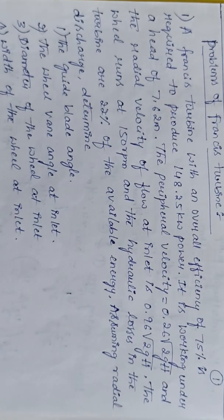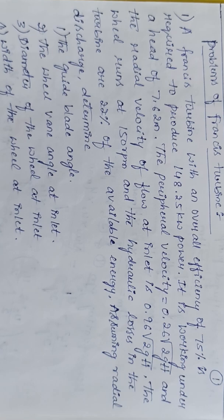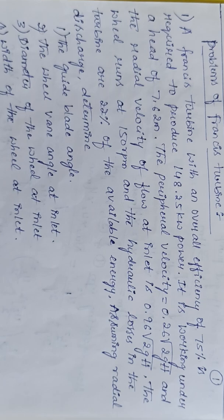Hello everyone, welcome back to my channel. In this video I will teach you a problem related to a Francis turbine. A Francis turbine with an overall efficiency of 75% is required to produce 148.25 kilowatt of power. It is working under a head of 7.62 meters. The peripheral velocity equals 0.26 times the square root of 2gH, and the radial velocity of flow at inlet is 0.96 times the square root of 2gH. The wheel runs at 150 rpm and the hydraulic losses in the turbine are 22% of the available energy. Assuming radial discharge, determine: the guide blade angle, the wheel vane angle at inlet, diameter of the wheel at inlet, and width of the wheel at inlet.